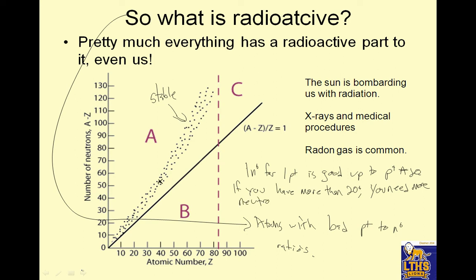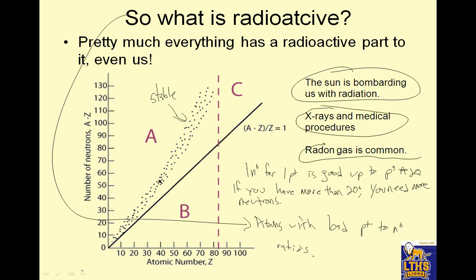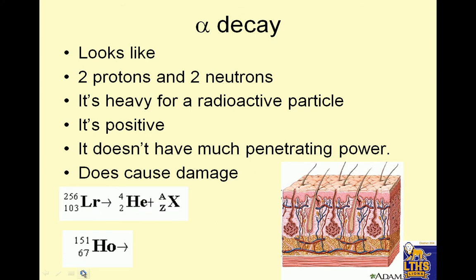The neutrons are like the glue that holds it together. Pretty much everything has a radioactive part to it, even us. The sun is bombarding us with radiation, but it's not so much that it gets us. X-ray and medical procedures hit us with radiation, but we don't do those every day. Radon gas is common, which can be a problem, but generally we can find ways to get rid of it. So there are common sources of radiation. Alpha decay looks like this: 4 over 2 He, and I like to put +2 up here to emphasize that it has a charge of plus 2.